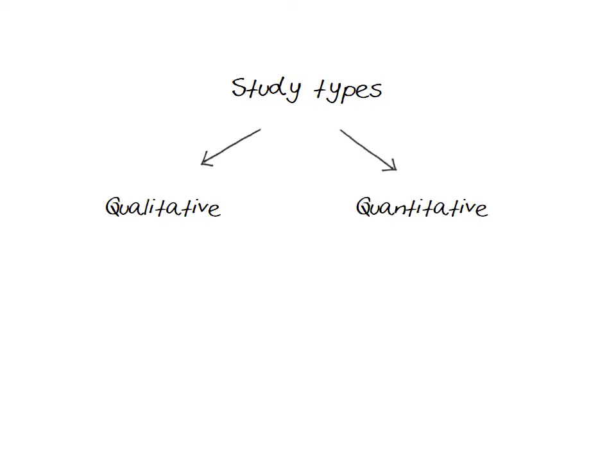Clinical studies can be categorised in a variety of different ways and sometimes these categories can overlap with one another. Firstly, they can be divided into studies that are qualitative and quantitative. Quantitative studies produce numerical data — that is, they deal with numbers.